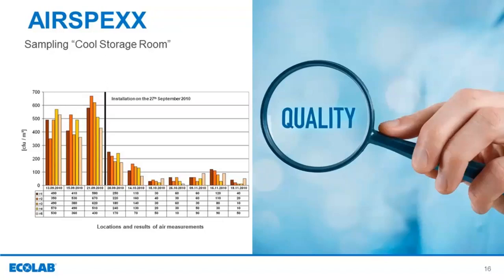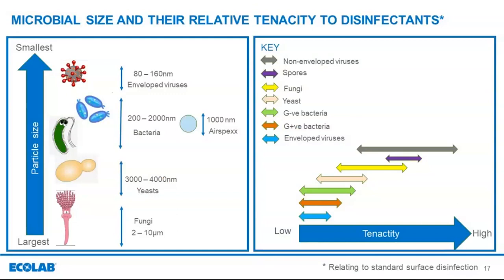Microorganisms come in all shapes and sizes, starting with enveloped viruses being the smallest, closely followed by bacteria, with fungi being one of the largest. The smaller the microorganism, the longer it is likely to remain airborne. From a simple perspective, enveloped viruses will remain airborne longer, followed by bacteria, then yeast, with fungi being the largest and so settling out the fastest in theory. This is a simplified schematic, as often bioaerosols contain different microbiology as well as organic matter, depending on what is in the air and what the source of the airborne microbiology is.